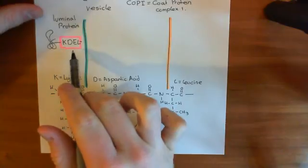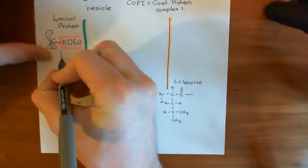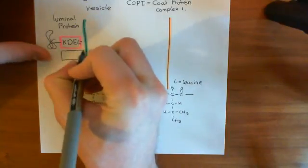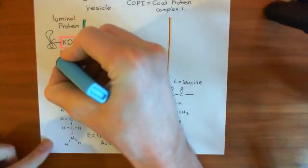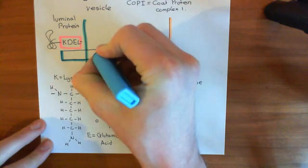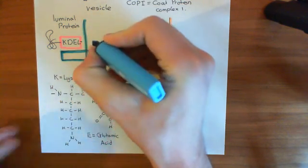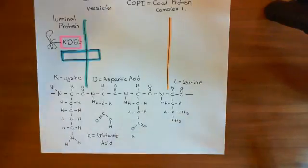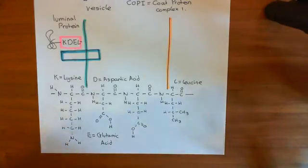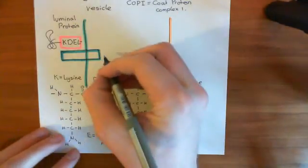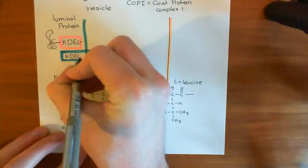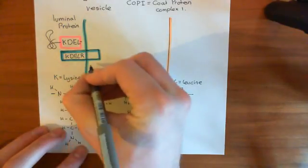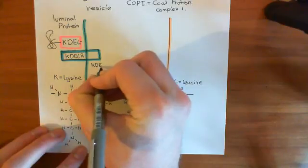What's going to actually recognise this KDEL sequence? There's a protein in the membrane of the cis-Golgi, which is known as the KDEL receptor. It binds to KDEL and recognises this sequence, then recruits the necessary proteins to move the luminal protein from the Golgi back to the ER. This protein is the KDEL receptor, often denoted KDEL-R for short.